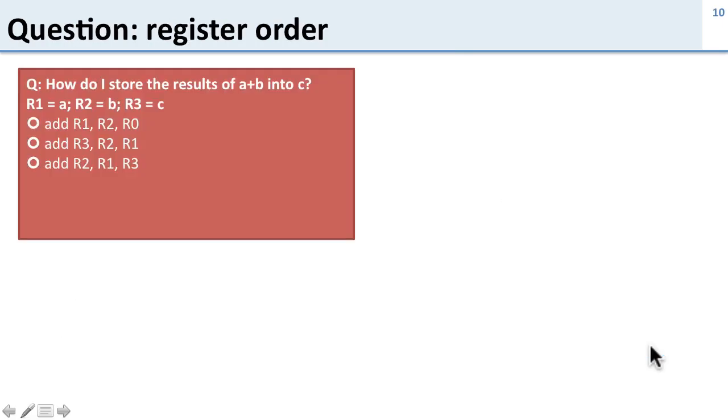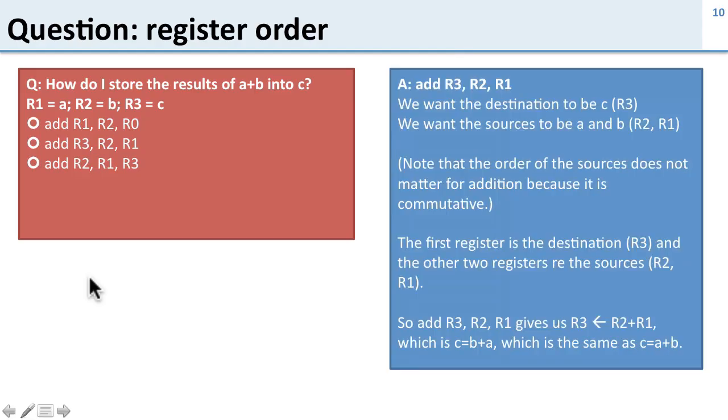So here's a question about register ordering. How do I just store the results of A plus B into C? And here's where my registers are. So R1 is A, R2 is B, and R3 is C. Well we're going to do add R3, R2, R1. And let's take a look at this. So the format we have is operation destination source 1 source 2. And what this does is it takes source 1 and source 2, applies the operation to them, and stores it into the destination.